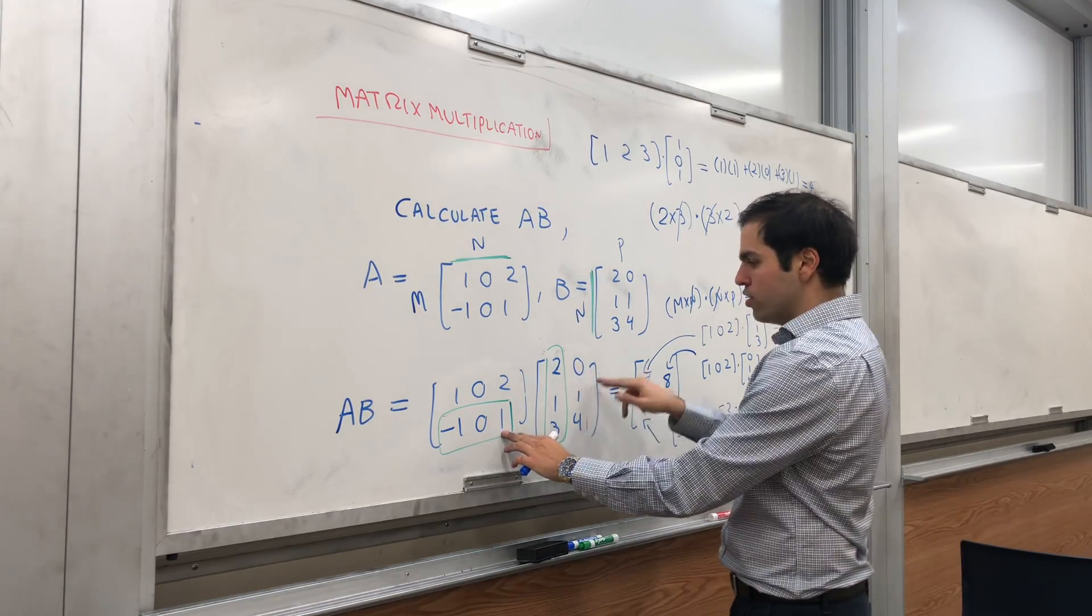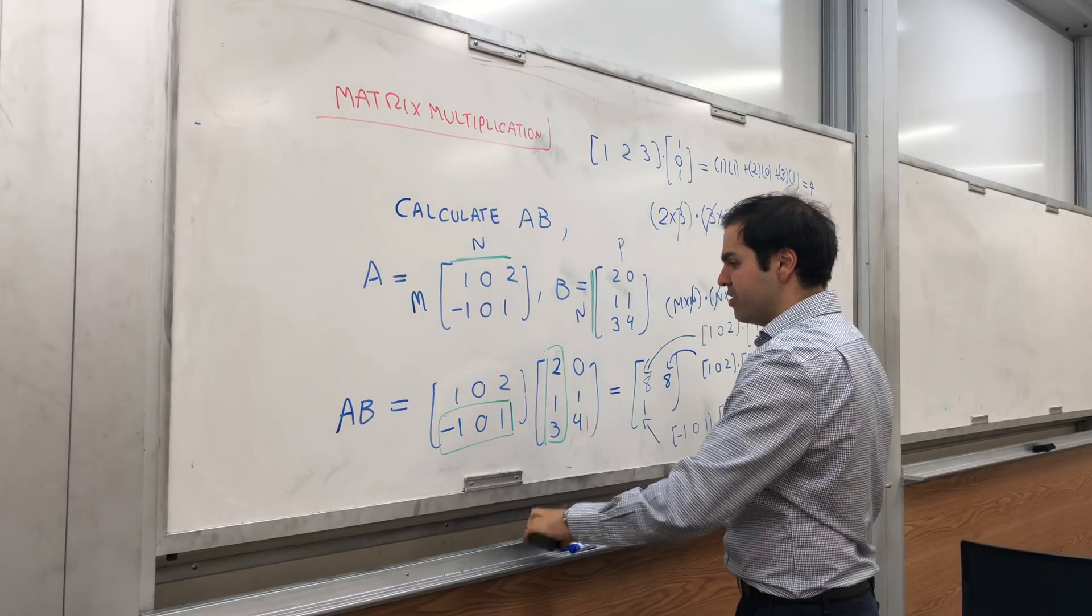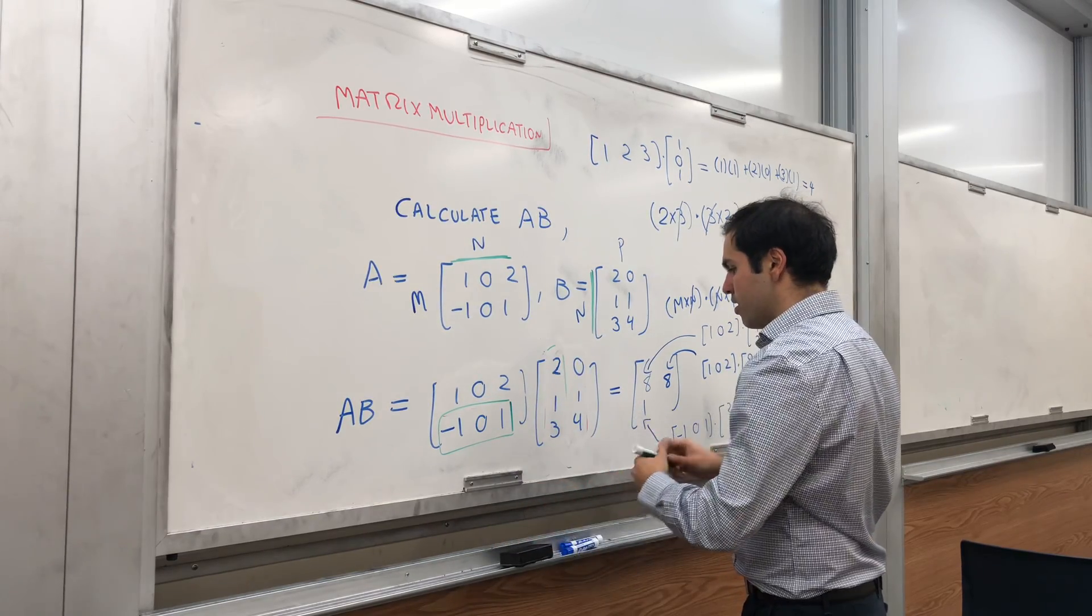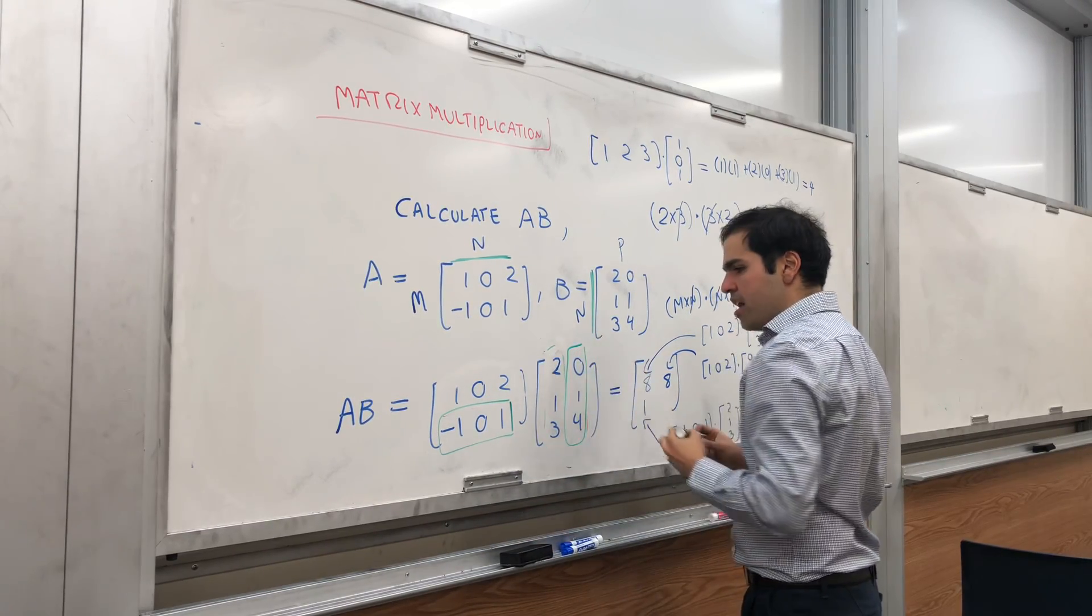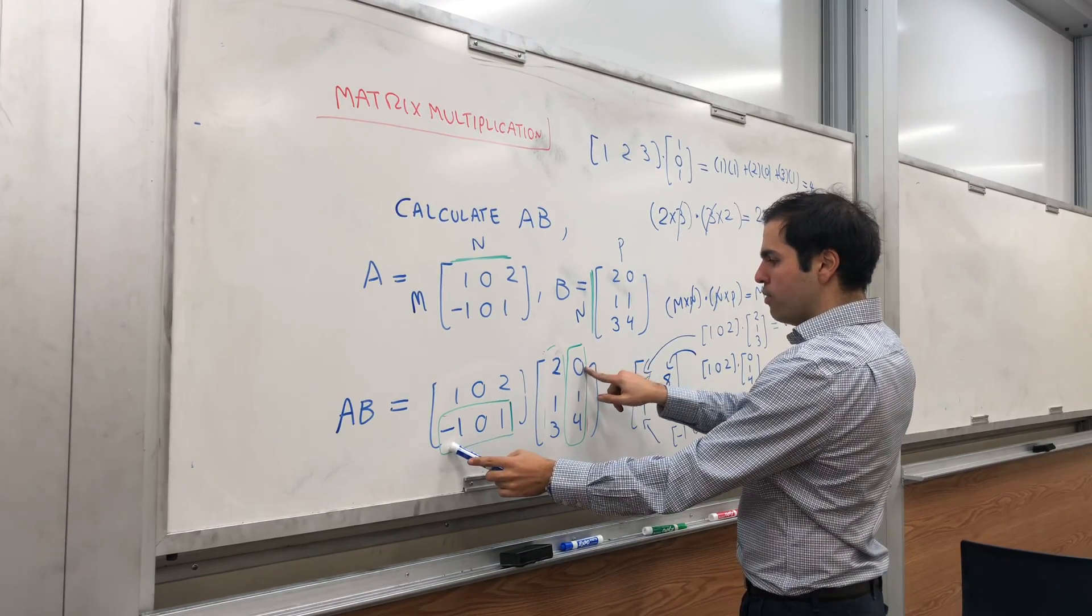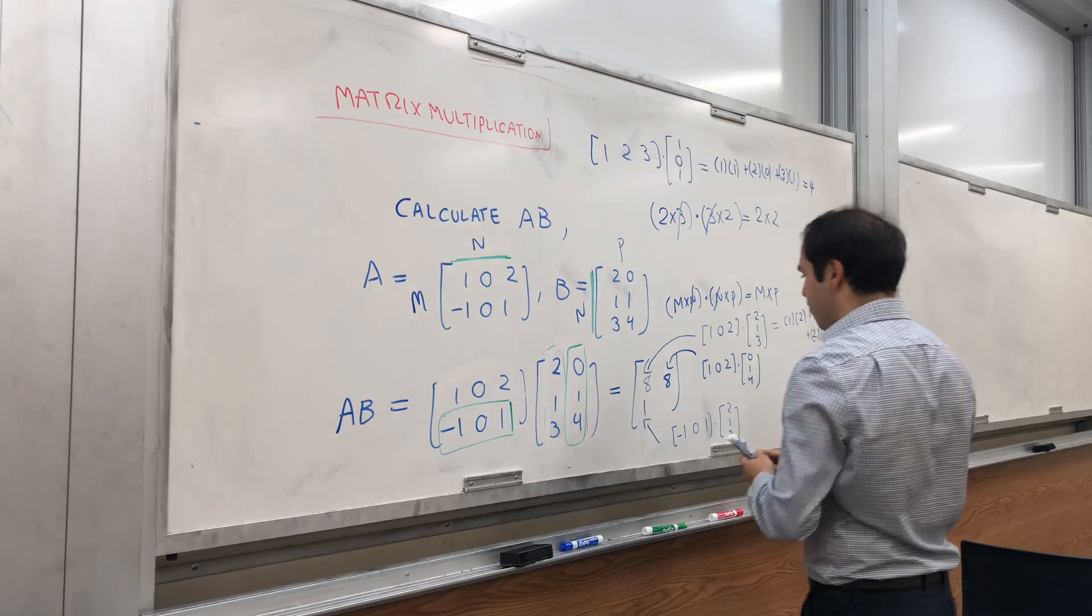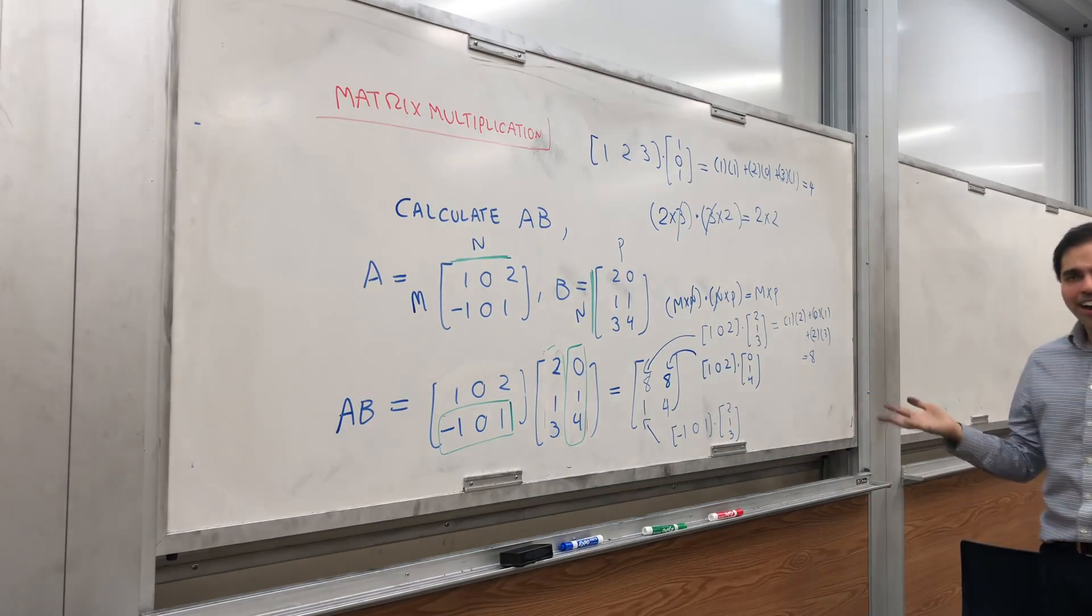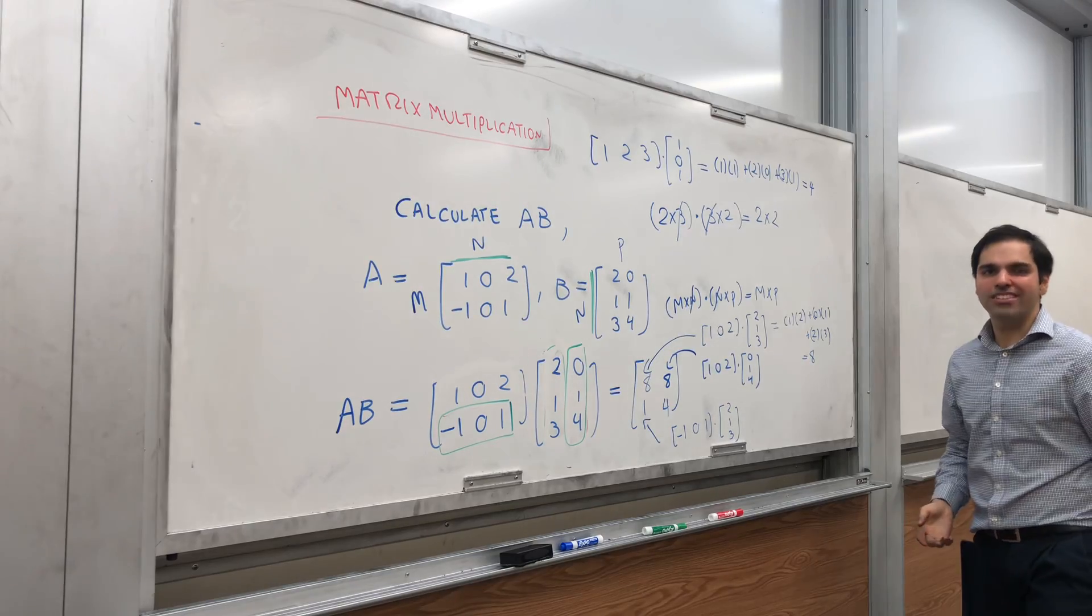And lastly you just move over and you do the second row and the second column. And you dot -1 0 1 with 0 1 4 which should give you 0 0 and 4. And tada this is your matrix AB.